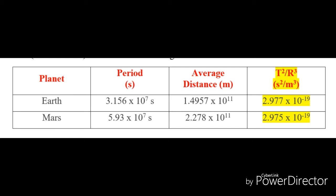Observe that the ratio is the same for Earth as it is for Mars. Kepler's third law provides an accurate description of the period and distance for a planet's orbits around the sun. Additionally, the same law that describes the ratio for the planets' orbits around the sun also accurately describes the ratio for any satellite about any planet. To put this law in simpler terms, the ratio of the squares of the periods of any two planets is equal to the ratio of the cubes of their average distances from the sun.